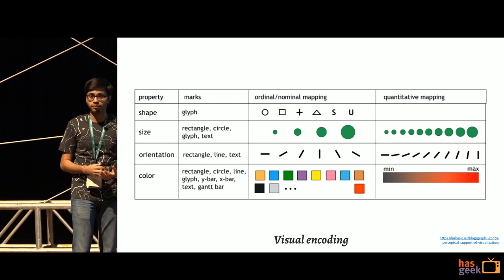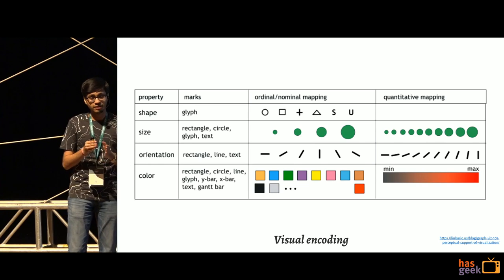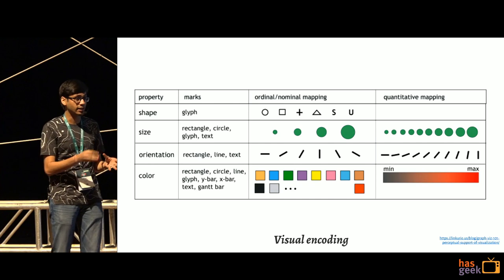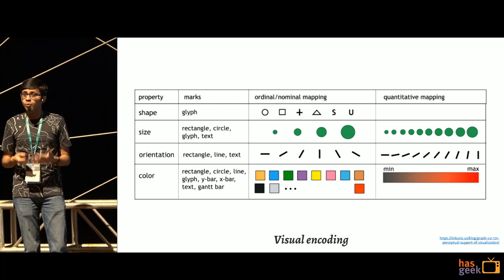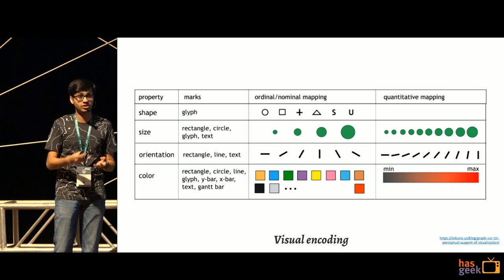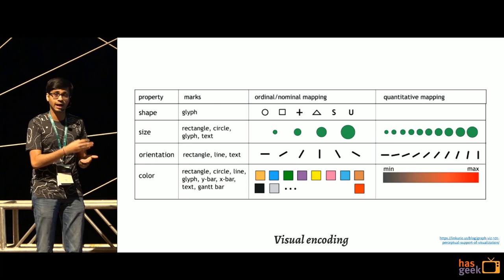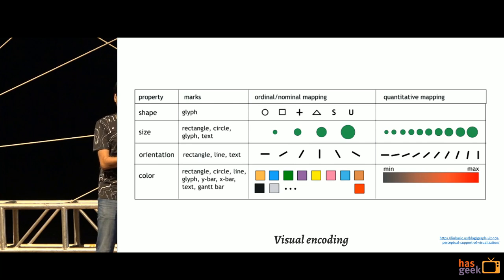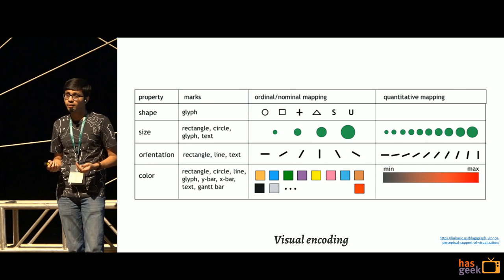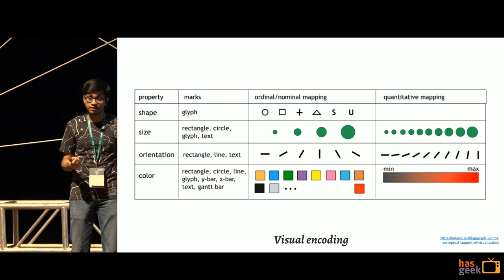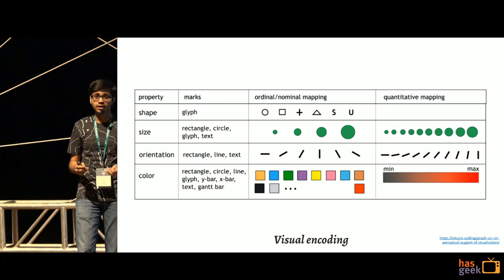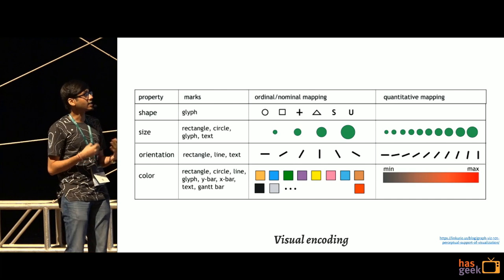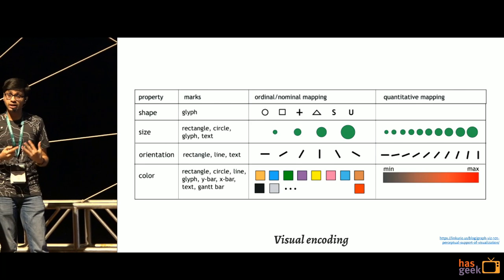There's an important distinction between continuous and categorical data. If your data is, say, how many buses go to each bus stop, that's a number ranging from 0 to 100 — you'd want a gradual scale. But if you're representing different types of facilities available at bus stops, where there's no inherent numerical order, that's where you'd use distinct colors to identify each category.